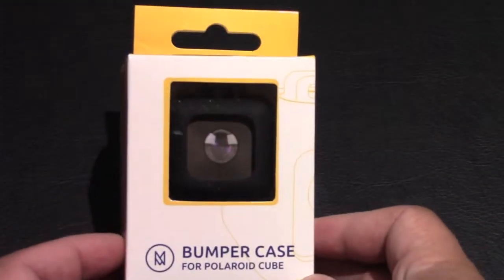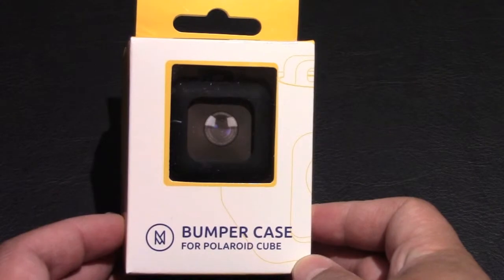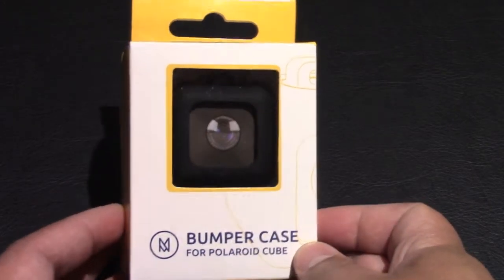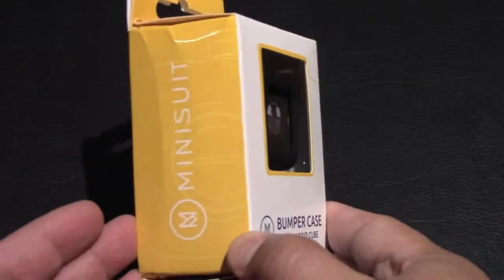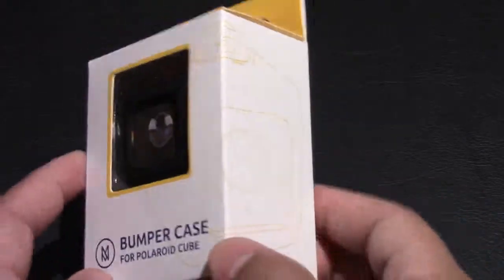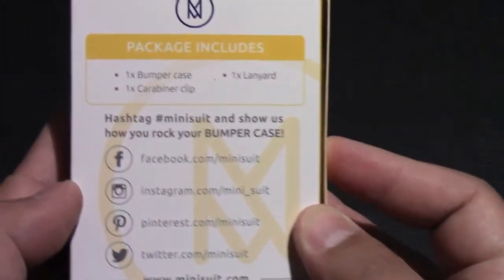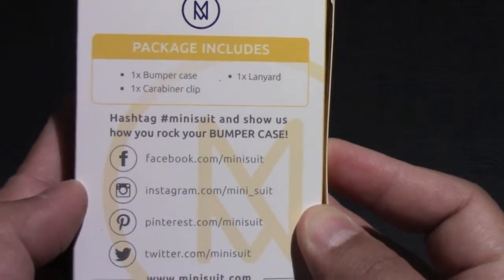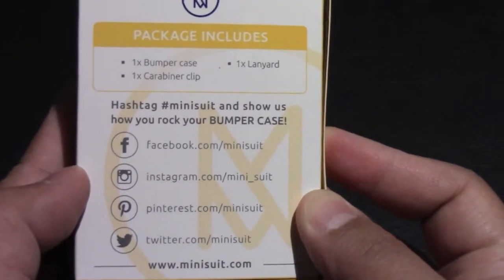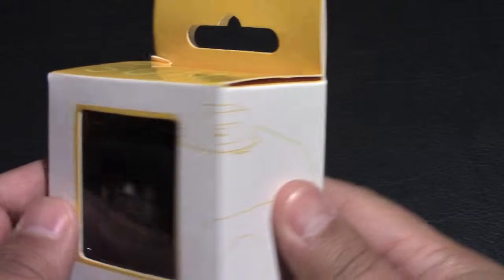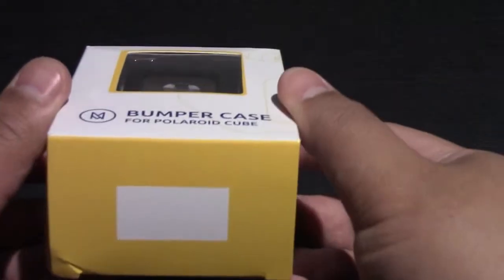Hey guys, welcome to Unbox Review. Today we'll be unboxing the mini suit bumper case for the Polaroid Cube HD camera. This package includes one bumper case, one carabiner clip, and one lanyard.